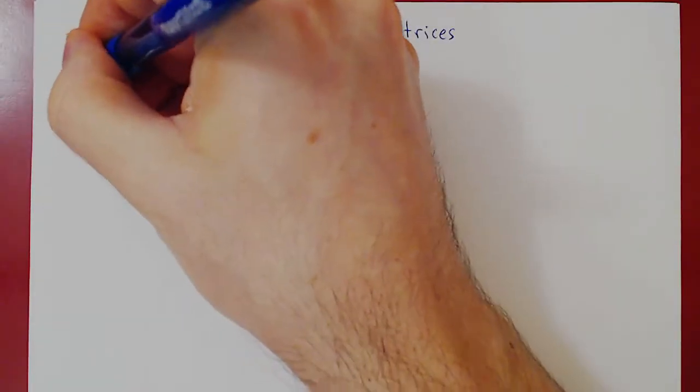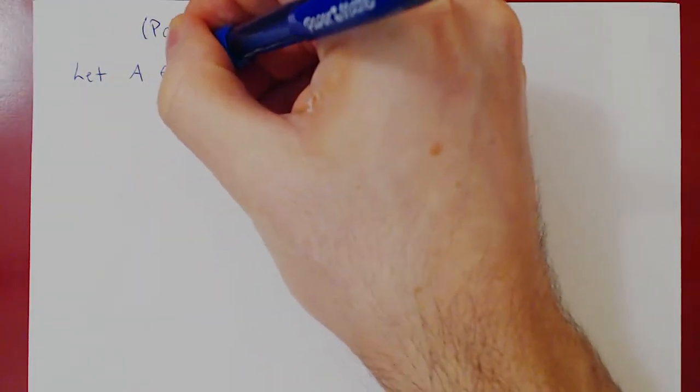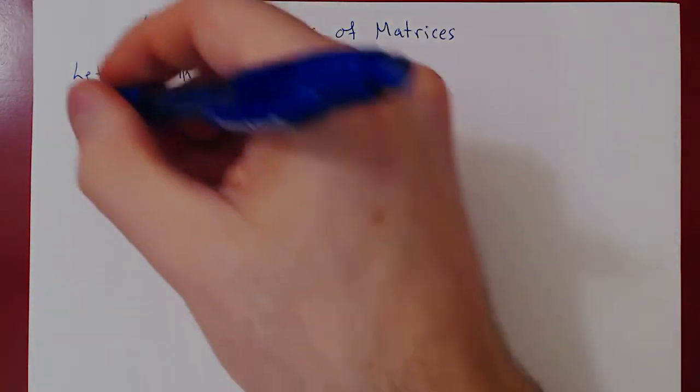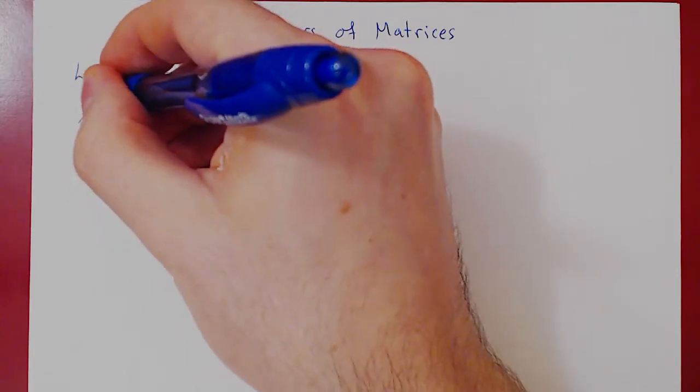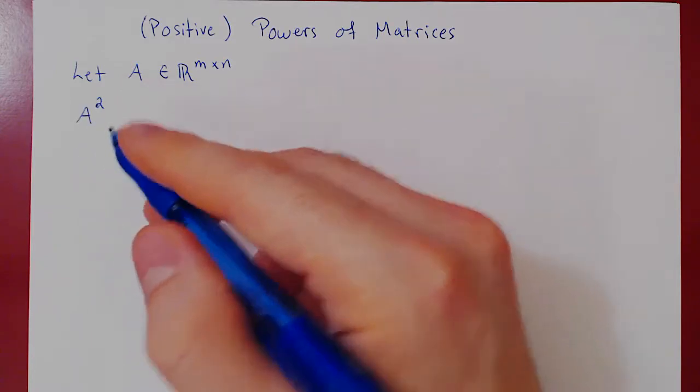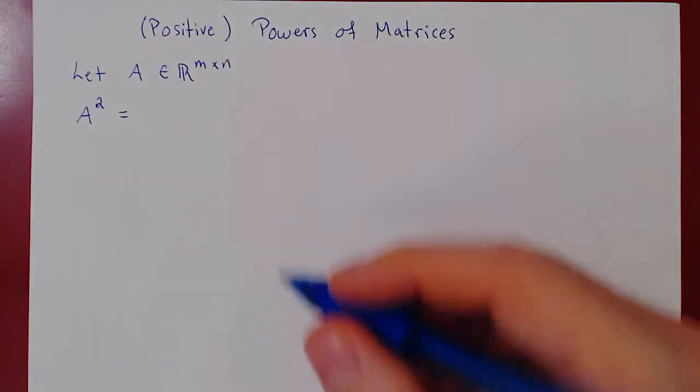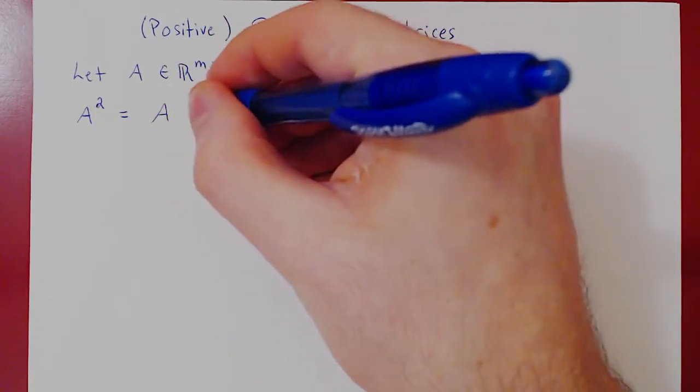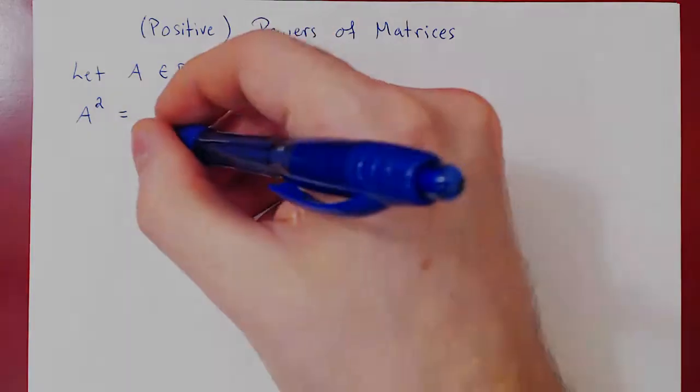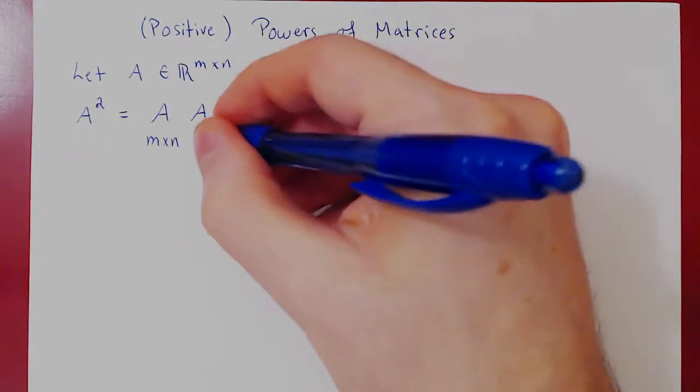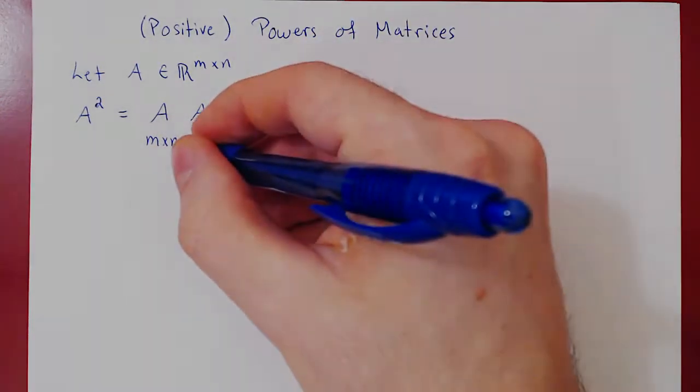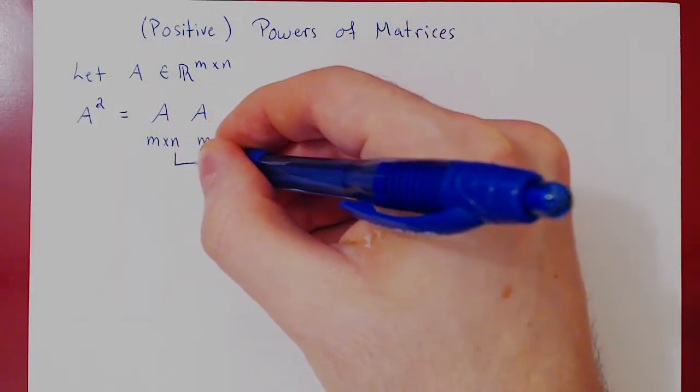So what if we take an arbitrary m by n matrix, so m rows and n columns, and we ask quite simply, well how would we define, first of all, a squared? Well if you think of it, if a was a real number, this would simply be a times a, so naturally we do the same thing with matrices, we do a times a, and we ask, well, will this be defined? Well, a is an m by n matrix, and the only way for a times a to be defined, if n equals m.